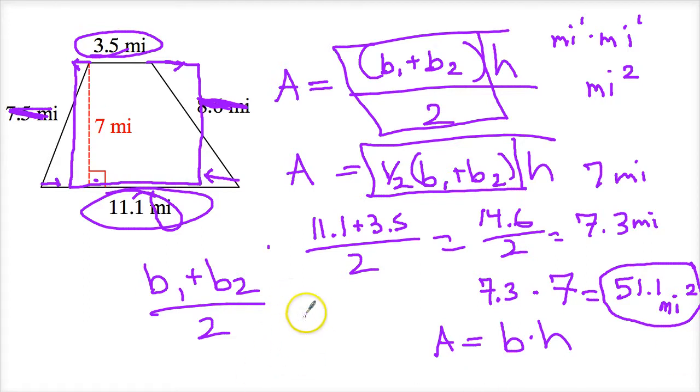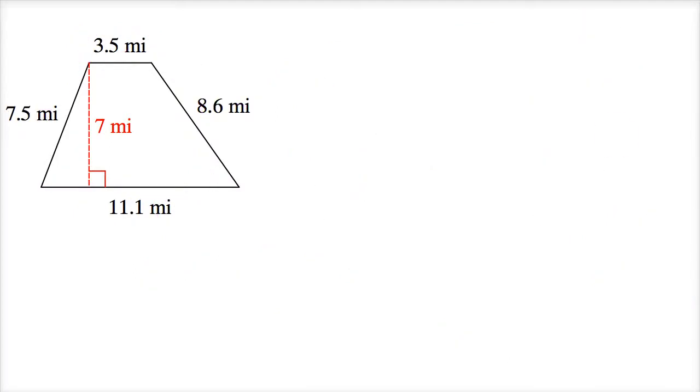If it's a volume, like you're doing a three-dimensional figure, then it'd be m to the third power. If you're just measuring length, it's just miles. Or mi to the third power from before. But that's it. I mean, it's not really that complicated. It's just the idea that you're averaging the two bases together. So let's do maybe one or two more.